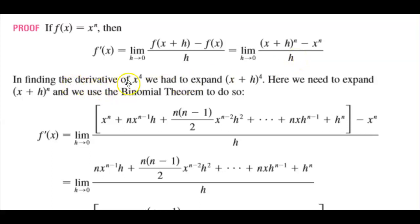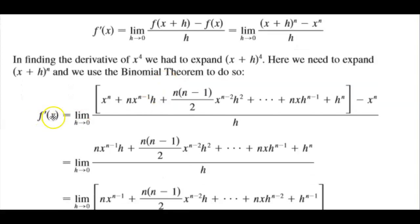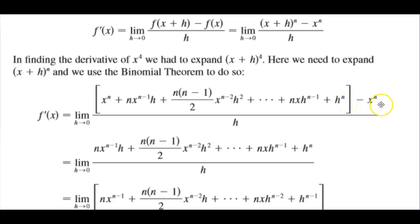Now in finding the derivative of x to the fourth, we had to expand x plus h to the fourth. So here we need to expand x plus h to the nth power, and we use the binomial theorem to do so. So f prime of x, which is equal to the limit as h approaches 0: x plus h to the nth power becomes x to the n plus n times x to the n minus 1 times h plus n times n minus 1 over 2 times x to the power of n minus 2 times h squared plus n times x times h to the n minus 1 plus h to the power of n, and that's minus x to the n.